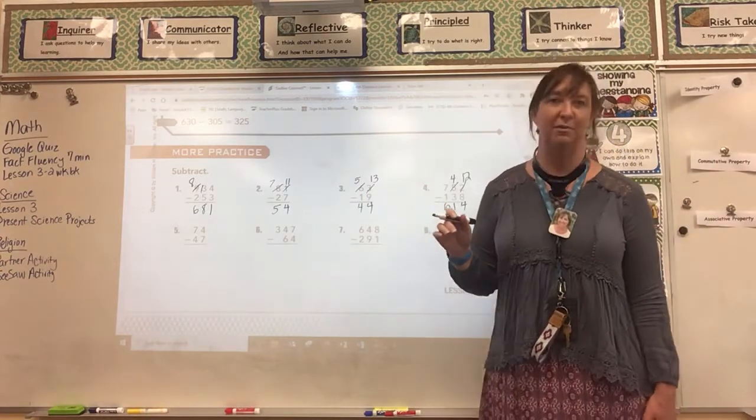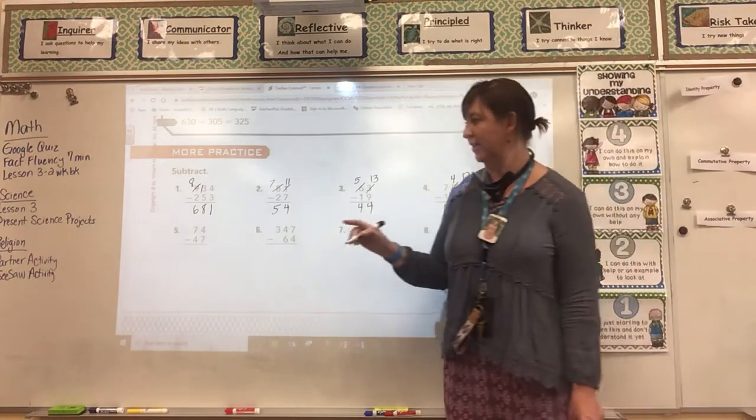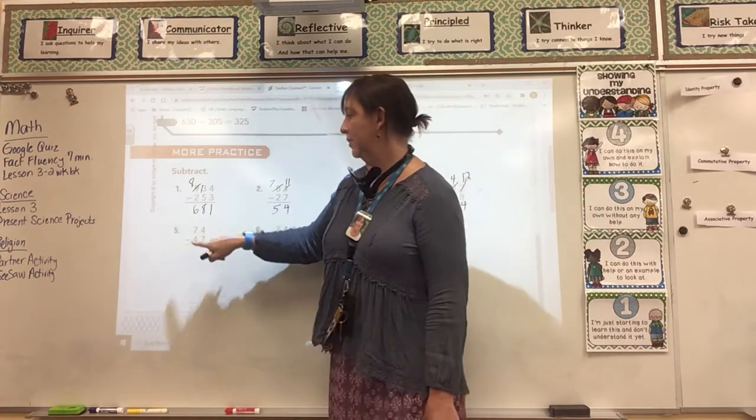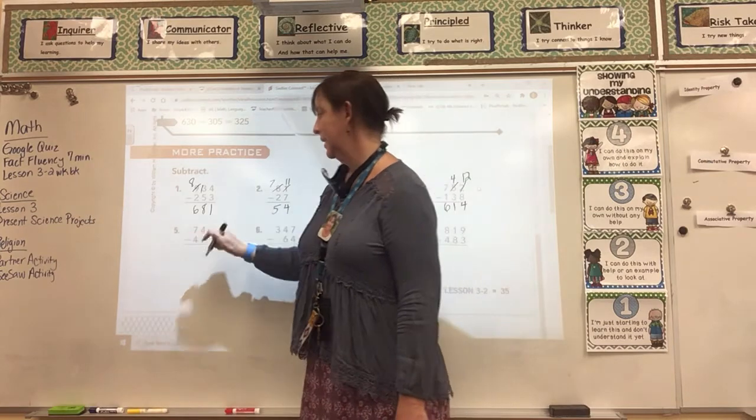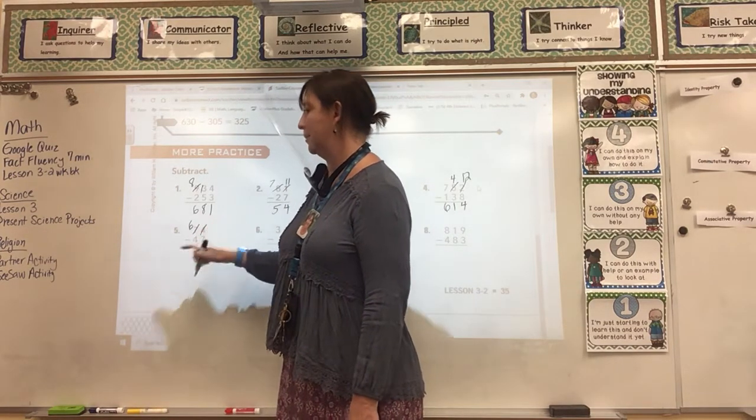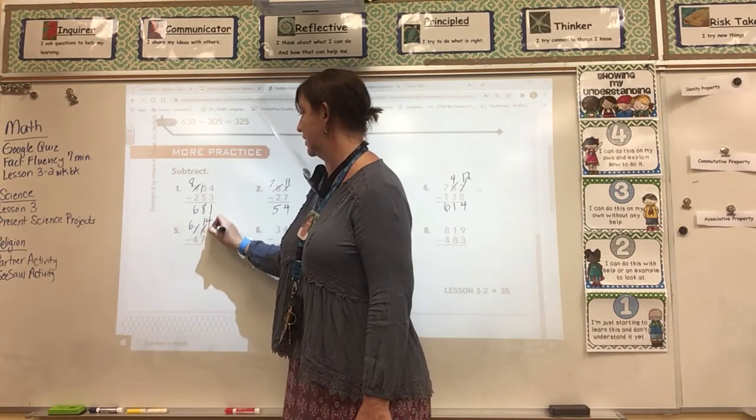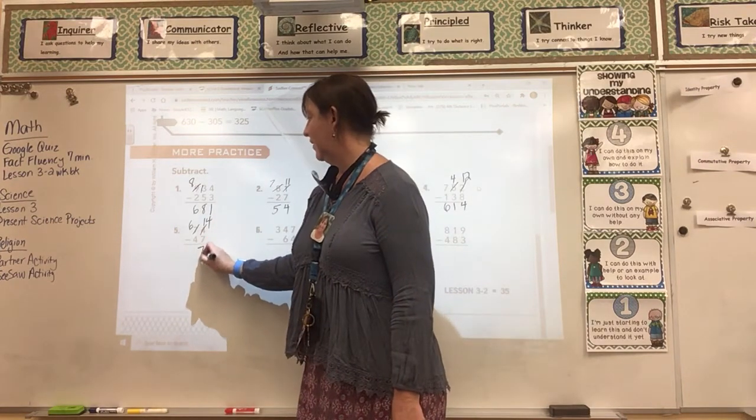Is everybody ready to move on to number 5? Let's take a look at number 5. I can't subtract 7 from 4. So I have to borrow from my tens place. It becomes a 6. I borrow 10 from the tens place. And then 4 becomes 14. 14 minus 7 is 7.